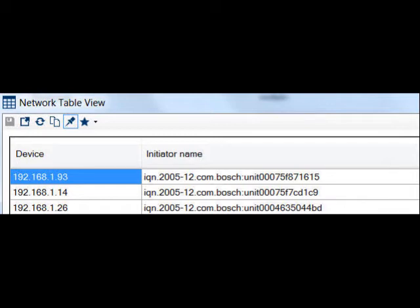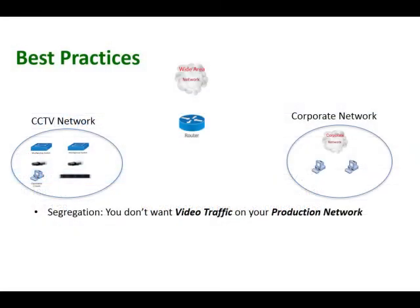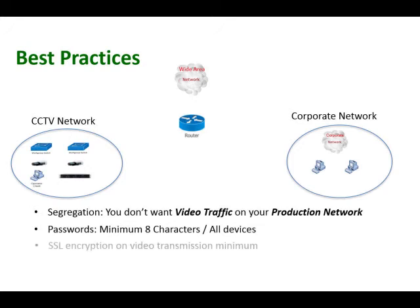So what are some best practices when dealing with any CCTV system? The first is segmentation — you do not want video traffic on your production network, especially if your video system consists of hundreds of cameras. Next, you should have a strict password policy in place. All devices should have passwords with a minimum of eight characters. SSL encryption should be used on all video transmissions.